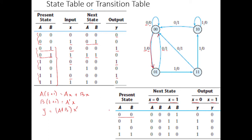Tracing through the table: from state 00 with input 0, we go to state 00 with output 0. From state 00 with input 1, we go to state 01. For state 10 with input 0, we go to state 00 with output 1; with input 1, we go to state 10 with output 0. The output values follow the same pattern derived from the equations.